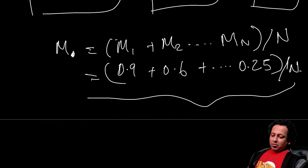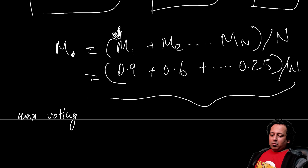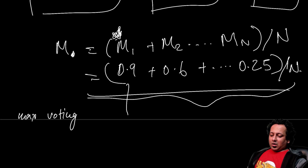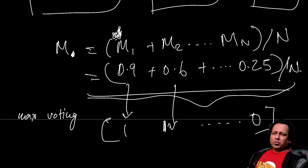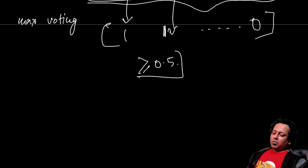This technique — bagging — reduces the error compared to one single model. If two people out of three say yes, you choose yes; it's also called max voting. For a regression problem you take the average. For classification, you take the average of probabilities and apply a threshold of 0.5 to get the class.